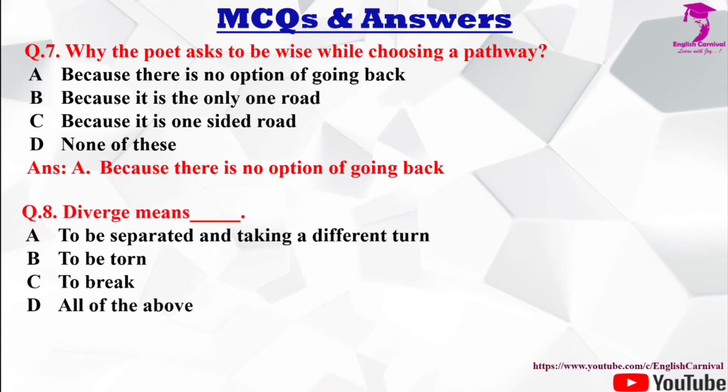Question number 8: Diverge means ___. Options: A) to be separated and taking a different turn, B) to be torn, C) to break, D) all of the above. The correct answer is A — to be separated and taking a different turn.